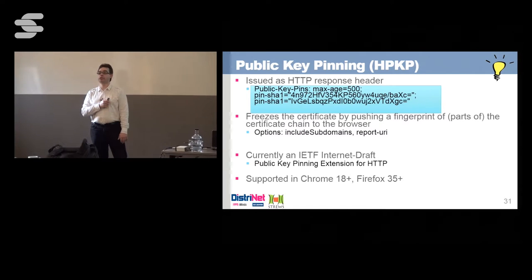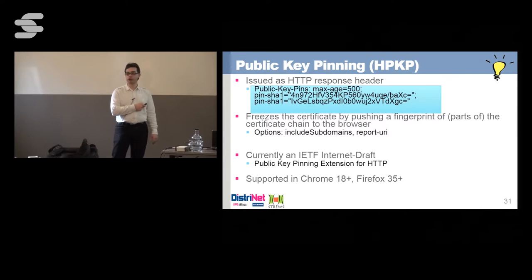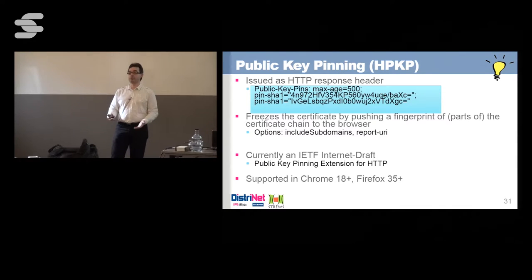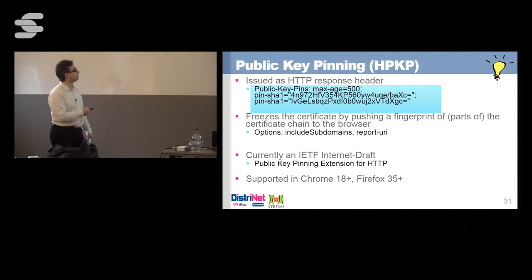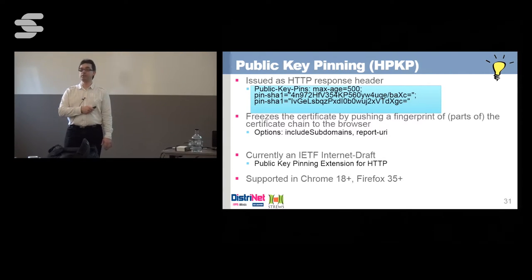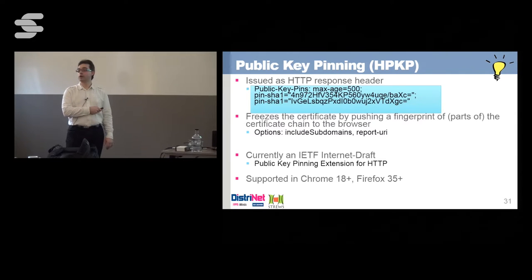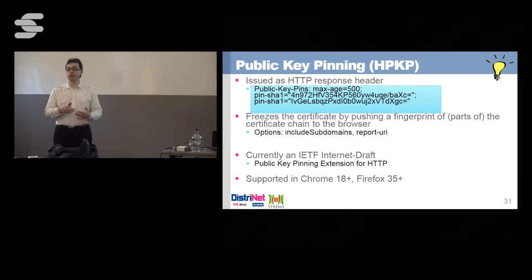Using report-uri without enforcement is a good first step — it gives you insights into how it's being processed on clients. I think this technology needs to grow further. One important note: the specification requires you to have at least two certificate fingerprints listed. You can't pin just one certificate, because if you revoke that certificate, your website would be inaccessible for the entire max-age period. The advice is to have multiple certificates for your company — stored very securely — so that if one is revoked, another can immediately take over and its fingerprint is already known by users.